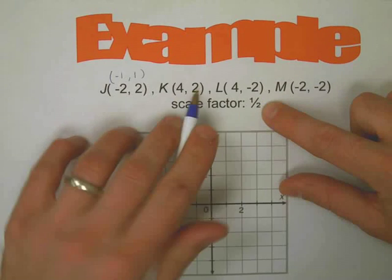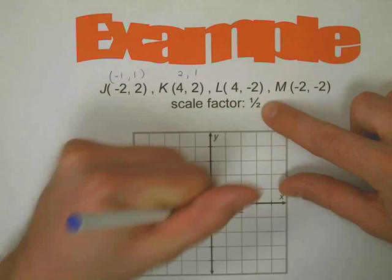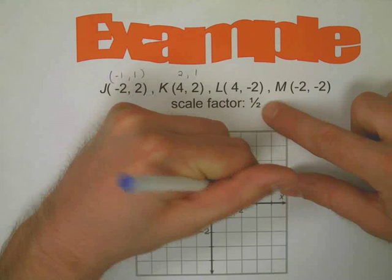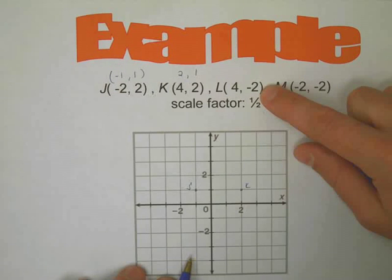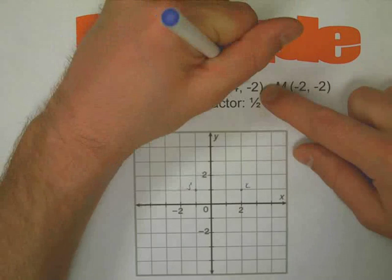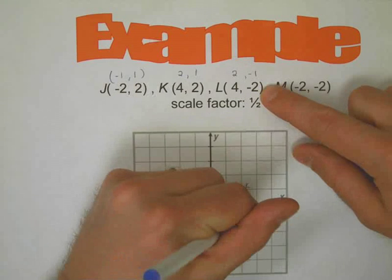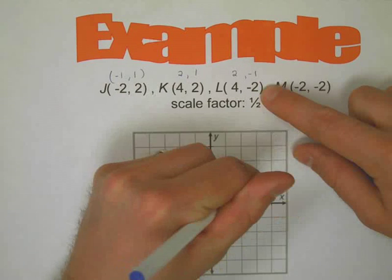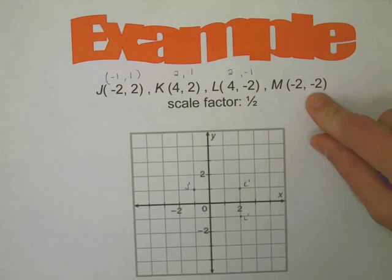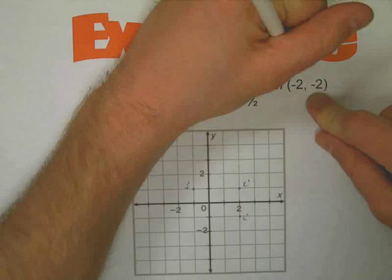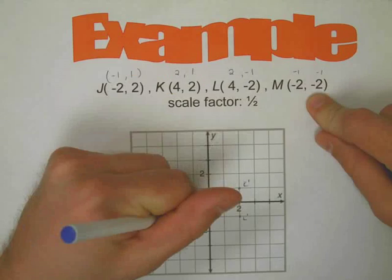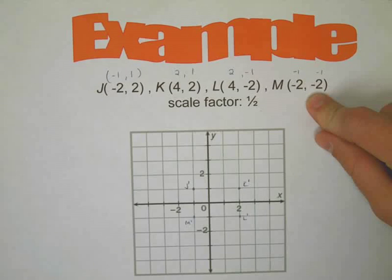K was at four, two, so now it's going to be at two, one. L was at four, negative two. Half of four is two, half of negative two is negative one.